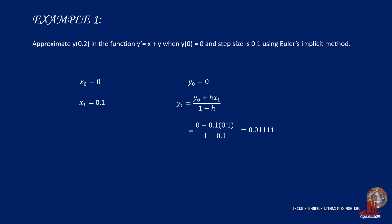Moving on to the next iteration, x2 = x1 + h, which will be 0.1 + 0.1, giving x2 = 0.2. y2 will be y1 of 0.01111 plus h of 0.1 times x2, which is 0.2, and this will be divided by 1 minus h of 0.9, and y2 will be computed as 0.03457. This is the answer we are required to solve.